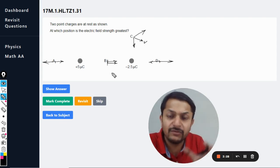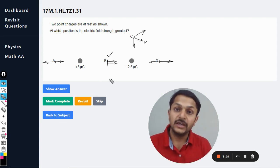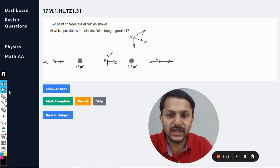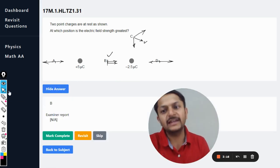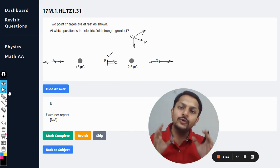So definitely the answer will be B, because when these two vectors are getting added with the zero degree angle, it becomes the maximum electric field. Let us see the answer, and yes my dear students, the answer is B. So this question we do in this manner.